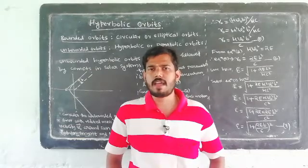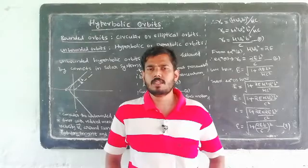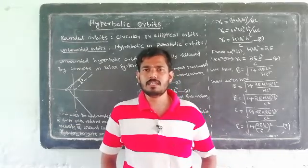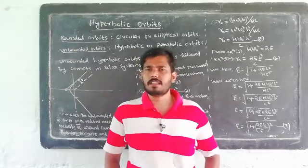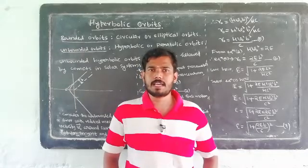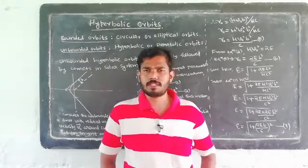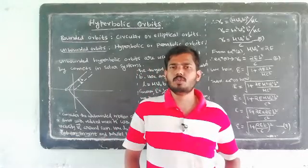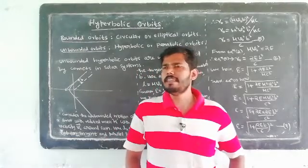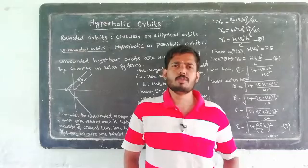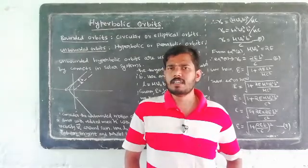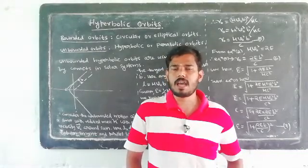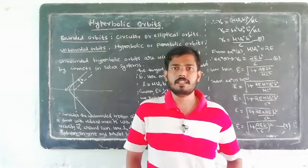The eccentricity value is 0, or epsilon equal to 1. The elliptical orbits are the same — the planets revolve in the solar system. Celestial objects follow hyperbolic orbits as well.